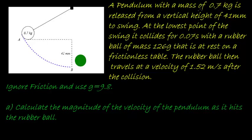A pendulum with a mass of 0.7 kg is released from a vertical height of 41 mm. The 0.7 kg mass is released to swing, and at the lowest point of the swing, it collides for 0.07 seconds with a rubber ball of mass 126 grams that is at rest on a frictionless table. The rubber ball then travels at a velocity of 1.52 m/s after the collision.